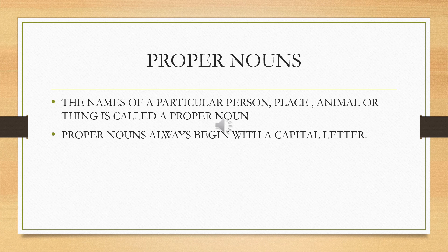The name of a particular person, a particular place, a particular animal, or a particular thing is called a proper noun. Children, always remember that proper nouns begin with a capital letter. It does not matter whether the proper noun is written at the beginning of the sentence, in the middle, or at the end — it will always begin with a capital letter.